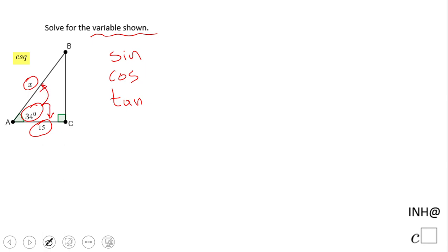Which trigonometric function uses these elements in it? The answer is cosine, right. So we're going to use the cosine: cosine of 34 equals adjacent 15 over hypotenuse X.